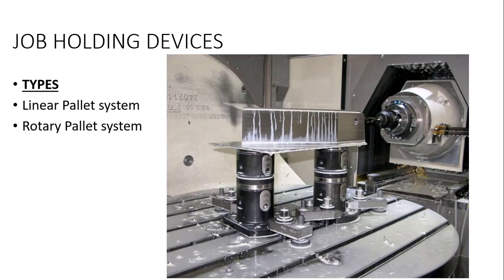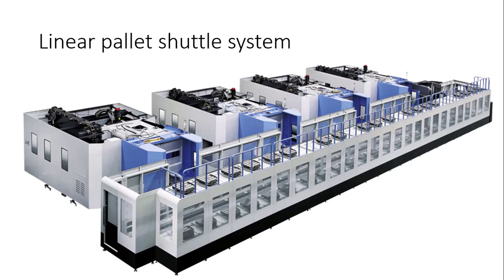There are two types of job holding devices. The first is the linear pallet shuttle system, where your job moves linearly — it is loaded at one position, then shifted to the next, then the next, and so on. Your job is held on the pallet, moves into the machine while the loading station remains vacant, then comes out and moves forward in a linear sequence.